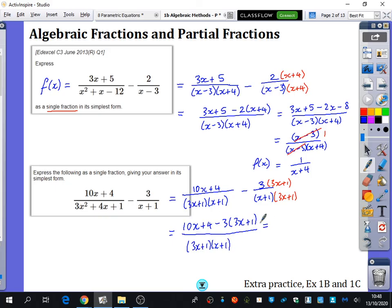Keep simplifying. That's 10x plus 4 minus 9x minus 3, all over 3x plus 1, x plus 1. The numerator then just gives you x plus 1. And so when I cancel these by dividing the top and bottom by x plus 1, I end up with, very similar to the previous question, 1 over 3x plus 1.